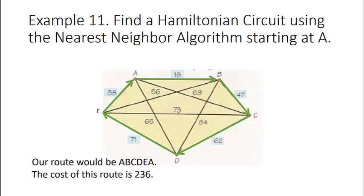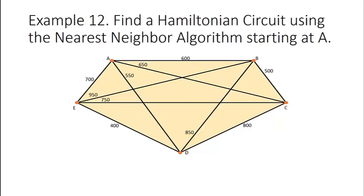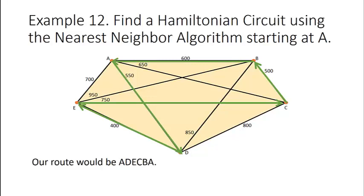Let's look at another example. Let's find a Hamiltonian circuit using the nearest neighbor algorithm starting at A. A's nearest neighbor is vertex D. Next we travel to vertex E which is 400 miles away. E's nearest neighbor is vertex C. Now we have no choice — C must travel to remaining vertex B and then return home to A. Our route is A, D, E, C, B, A and the cost of this route is 2800.